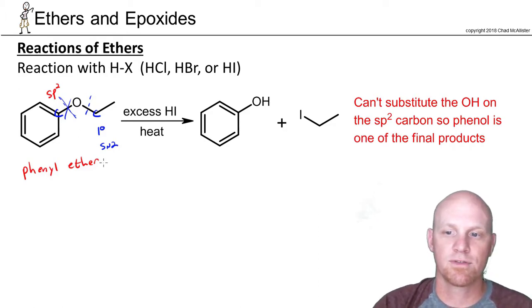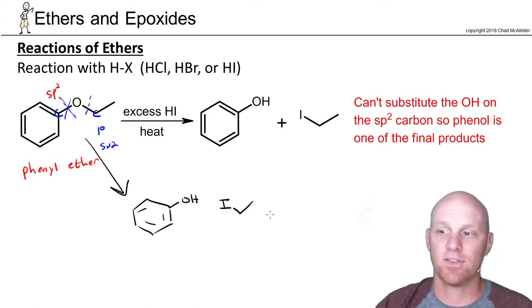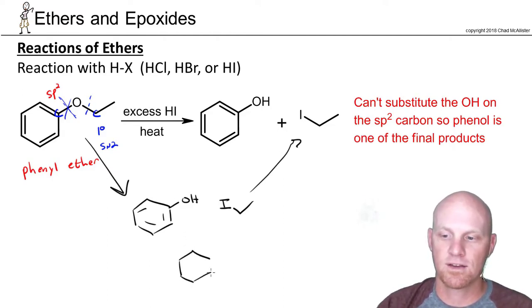So it turns out with the first equivalent of HI here, we're going to end up with phenol on one side. And we'll end up in this case with HI, the alkyl iodide on the other side, as you saw right there. So but with phenol here, now we might be able to protonate that phenol. And so technically, we might get as far as protonating it right there.